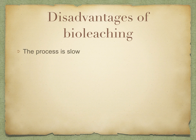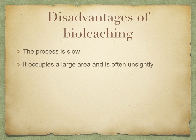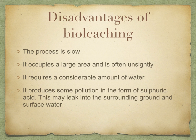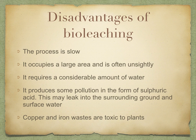Disadvantages of bioleaching: the process is slow, it occupies a large area and is often unsightly, it does require a considerable amount of water, and it produces some pollution in the form of sulfuric acid, which could leak into the surrounding ground and surface water. Copper and iron wastes are also toxic to plants.